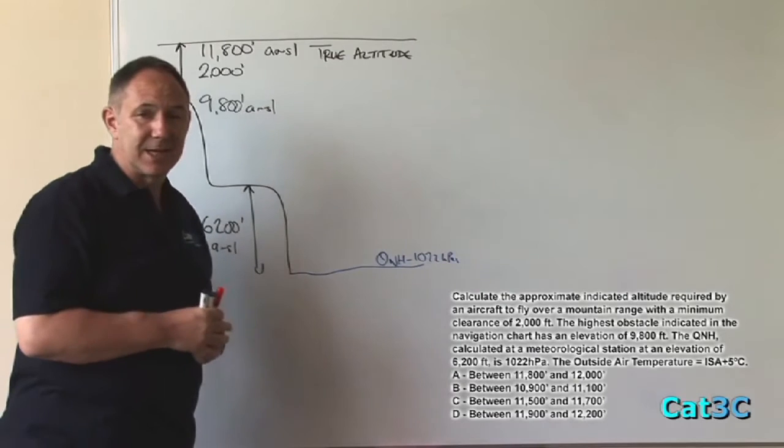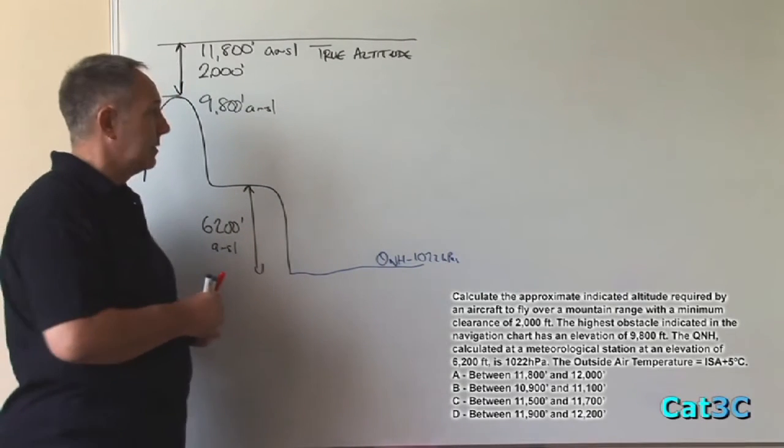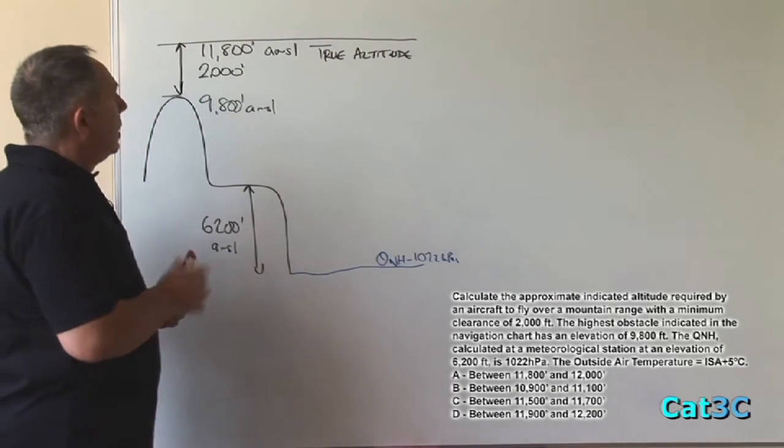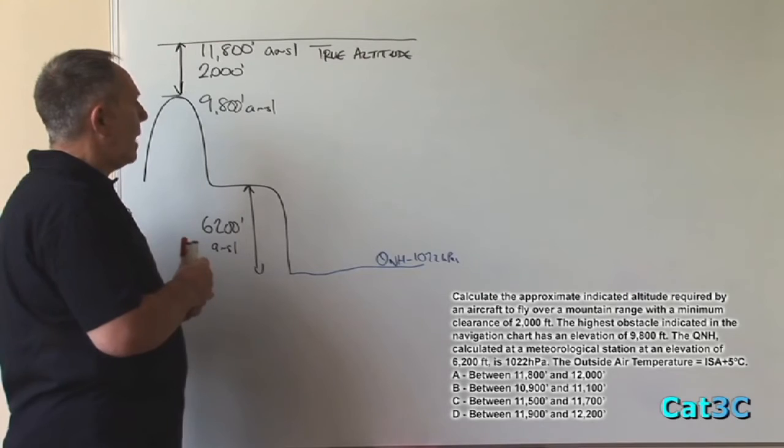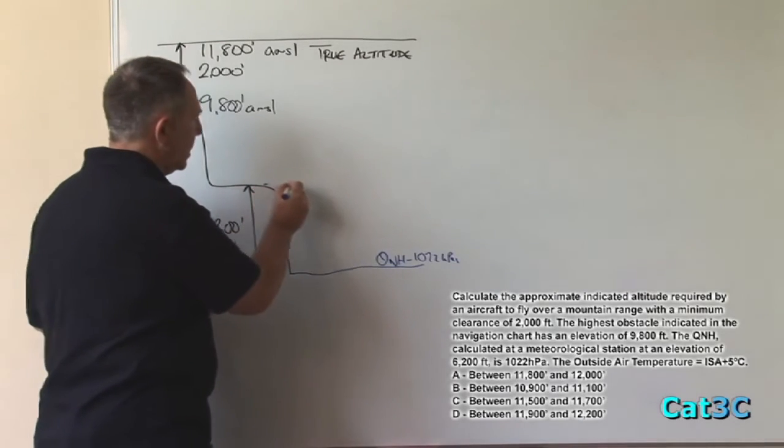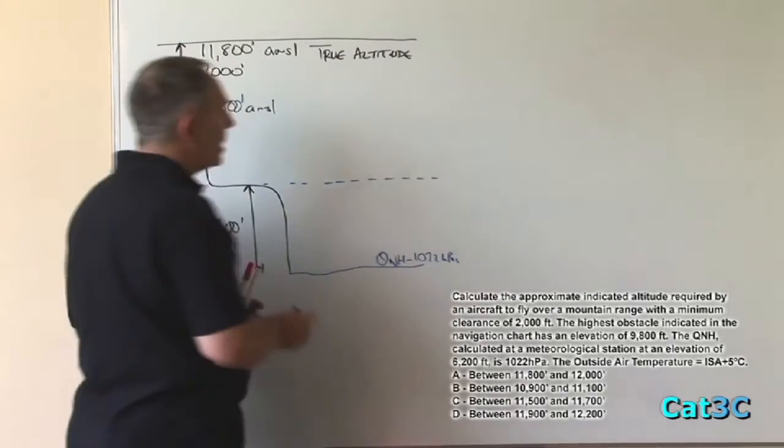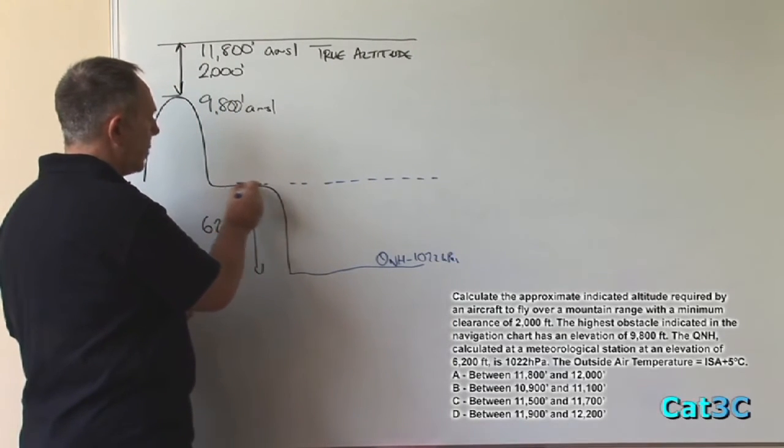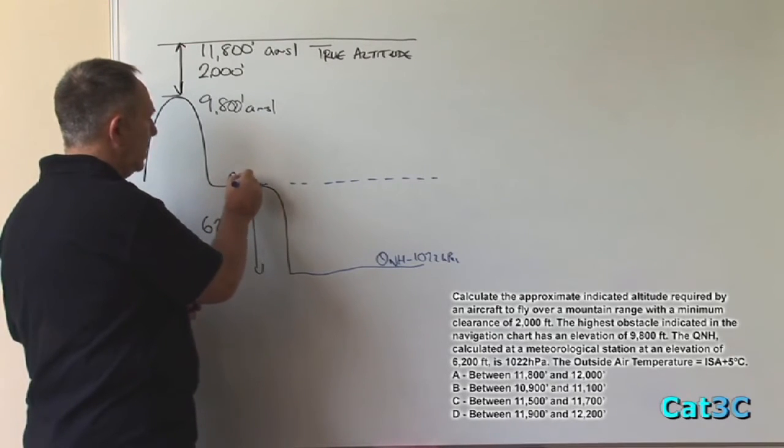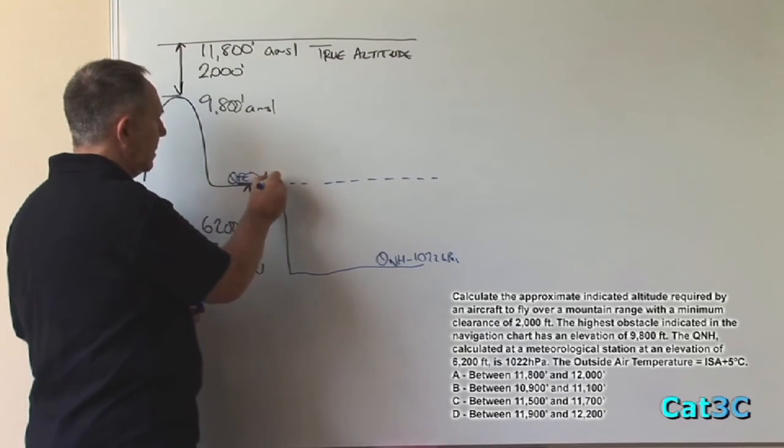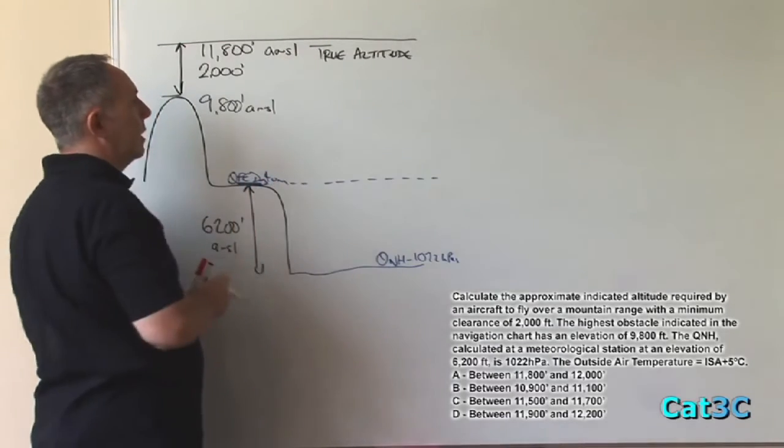What we need to do is to calculate the indicated altitude. Indicated altitude from true altitude will be calculated by applying the temperature error correction. The temperature error correction is calculated within that region between the point where the pressure is actually measured, that would be the QFE datum, and the altitude of the aircraft.